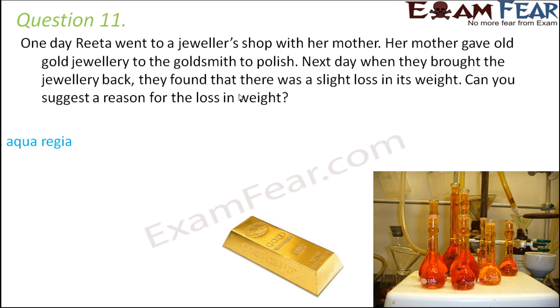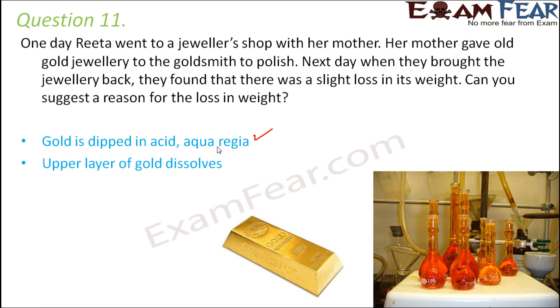What do we use for that? We use the acid aqua regia, which is a mixture of concentrated nitric acid and concentrated hydrochloric acid. When gold is dipped in this acid, one layer is gone, meaning we are actually losing some amount of gold. Therefore, when you weigh it again, there is a slight loss in weight - the upper layer of gold dissolves and goes away.